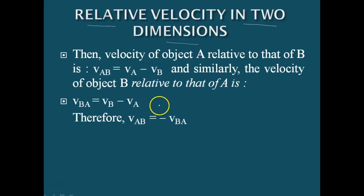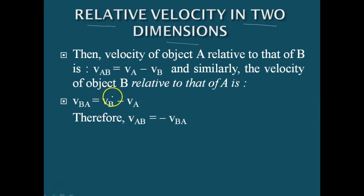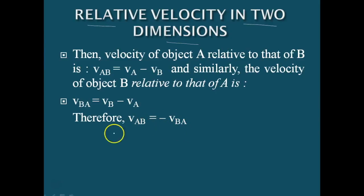Similarly, the velocity of object B relative to A is given by VBA, that is VB minus VA. By seeing these two equations, we can write VAB is equal to minus VBA in direction. If you consider the magnitude, then both VAB and VBA are equal.